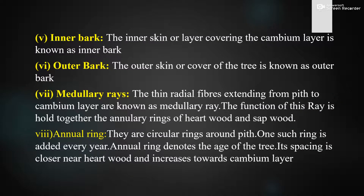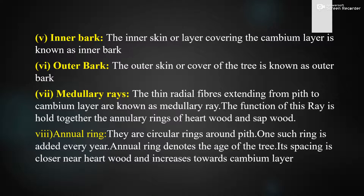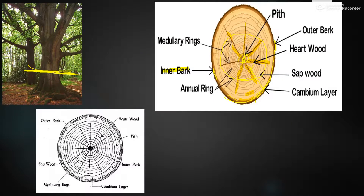Moving to medullary rays: the thin radial fibers extending from the pith to the cambium layer are known as medullary rays. These rays extend from the pith to the cambium layer. The function of medullary rays is to hold together the annular rings of heartwood and sapwood — they act like a bond.